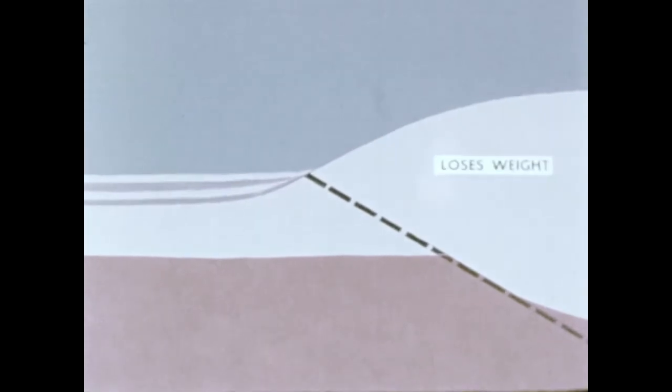The block of earth from which material has been worn away loses weight, and the block on which material has been deposited gains weight. When the difference in weight between them becomes great enough, they move in opposite directions. The block on the right moves up, the one on the left moves down. They slip along a crack or fault. The movement of these huge blocks of earth crust causes earthquakes.